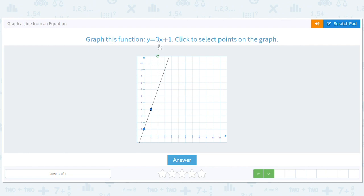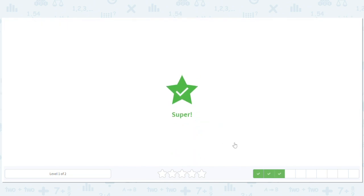And the bigger the number here is, the steeper the lines. Because we get more rise for our run.